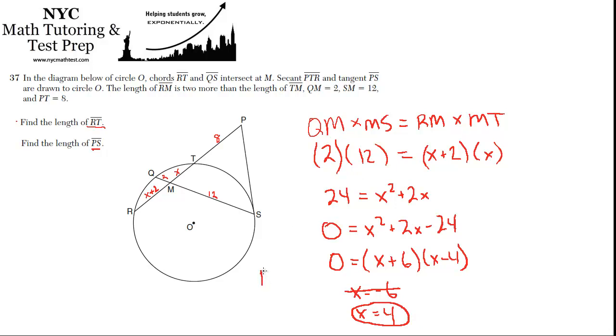So what does that mean for RM and MT? RM must be X plus 2, which is 4 plus 2, so that's 6. And then MT is just X. So MT or TM, take your pick, is 4.